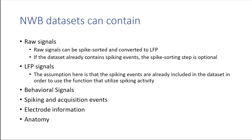I'll give an example using invasive neurophysiology with NWB, which also includes spiking information, adding an extra layer of analysis. In an NWB file, you can store the raw data set — the highly sampled signal at around 30k Hz for spike sorting later in the pipeline — or you can save the LFP. With the LFP, the assumption is that you already have the spikes stored in the NWB file. You can have electrophysiology signals, behavioral signals, and events such as spiking events when neurons fired, or acquisition events like button presses or stimulation.